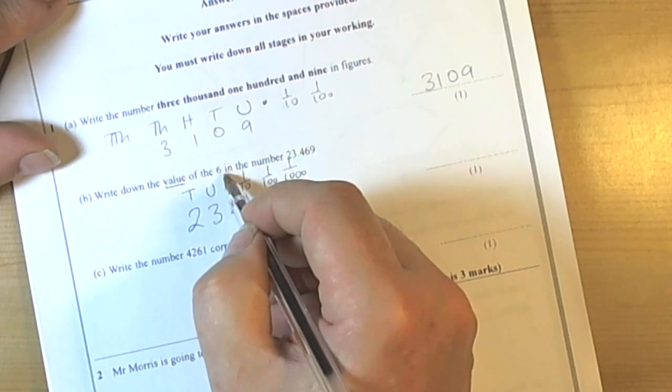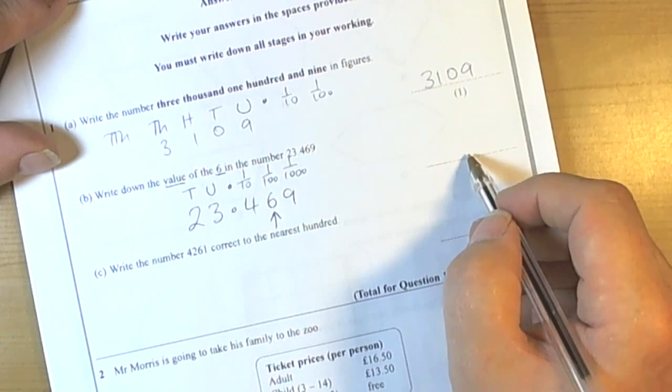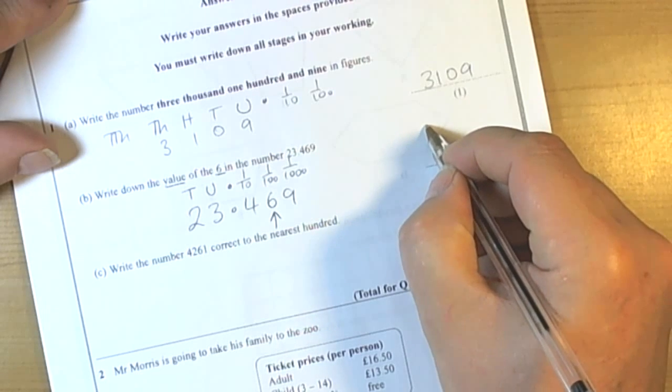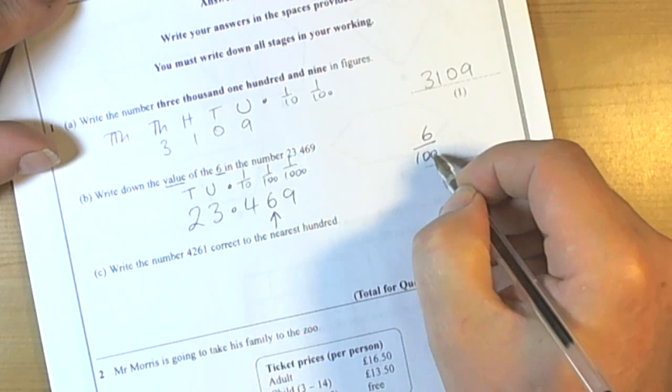It's asking for the value of the 6. So be careful that you don't just put down here hundredths as such. We really ought to be putting down what the value of that is. So it's 6 hundredths.